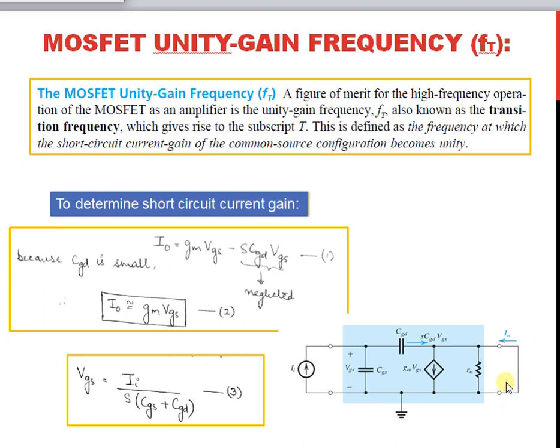The current in the short circuit, I0, is given by gm times VGS minus s times CGD times VGS. This equation is obtained by applying Kirchhoff's current law. The term s times CGD times VGS can be neglected because the capacitance CGD is very small and corresponds to the internal capacitance of the MOSFET.